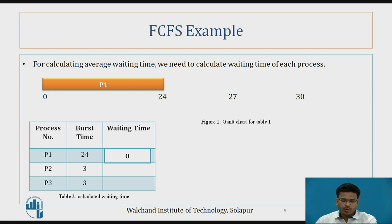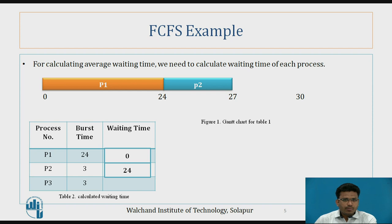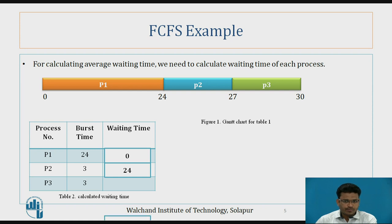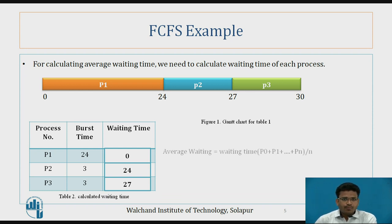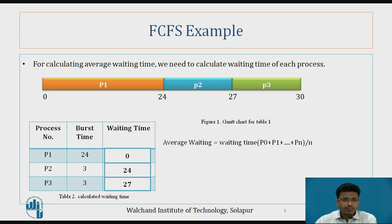Then P2 comes into the picture for execution. P2's waiting time is nothing but the burst time of P1, because P2 needs to wait until the execution of P1 completes. P3 will start execution at 27 milliseconds because it needs to wait for both P1 and P2 to complete. So P3's waiting time is 27. In this way we calculate the waiting time, and we need to calculate the average waiting time for this FCFS scheduling.